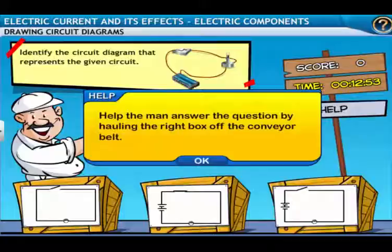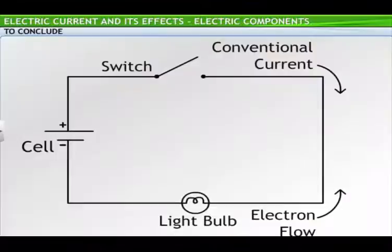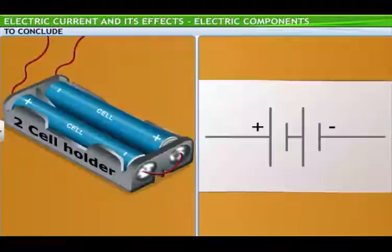This brings us to the end of the lesson on electric components. In this lesson, you learned to explain the significance of circuit diagrams and symbols used in them, interpret different symbols for electric components in a circuit diagram, describe a battery and identify its symbol, and draw a circuit diagram using symbols for electric components.